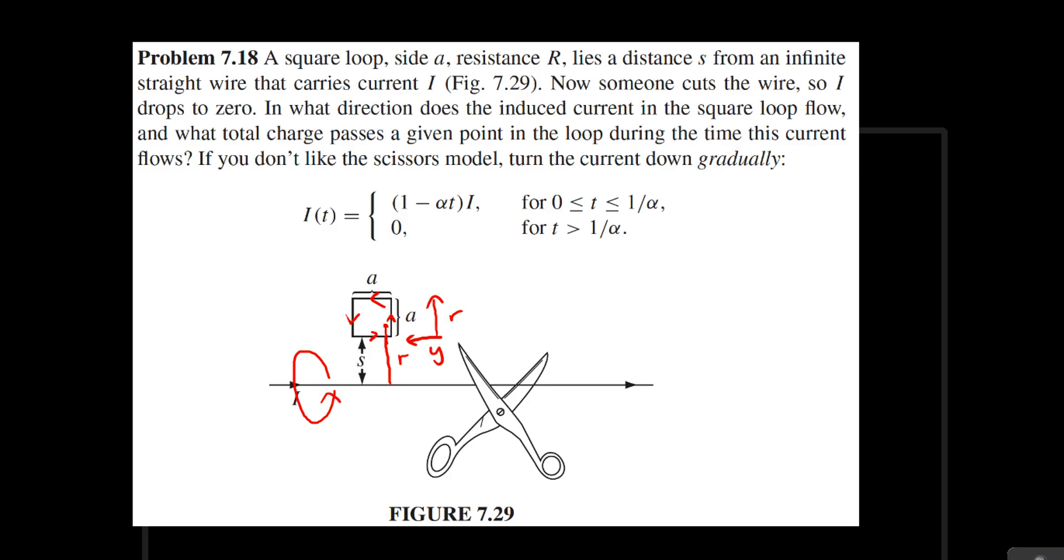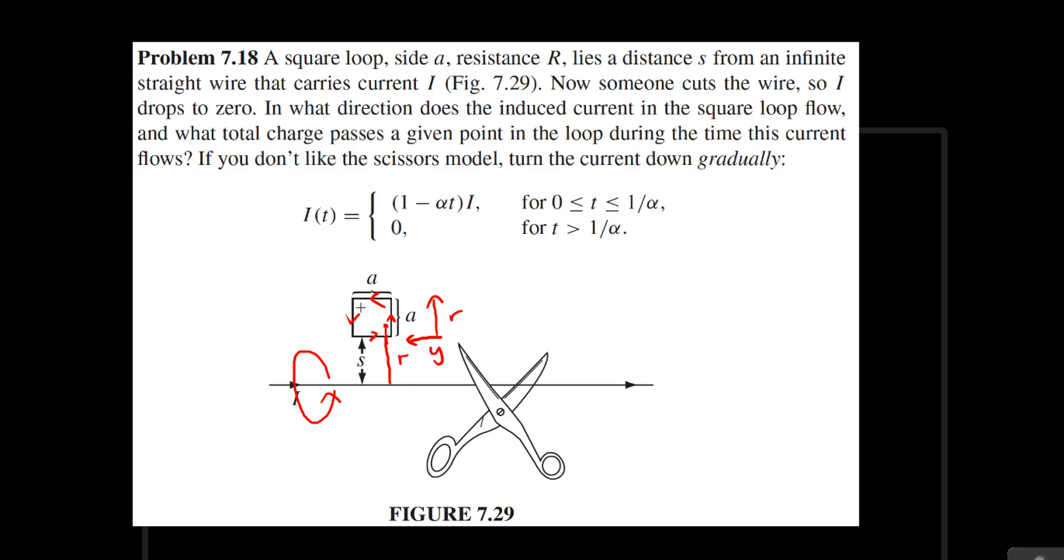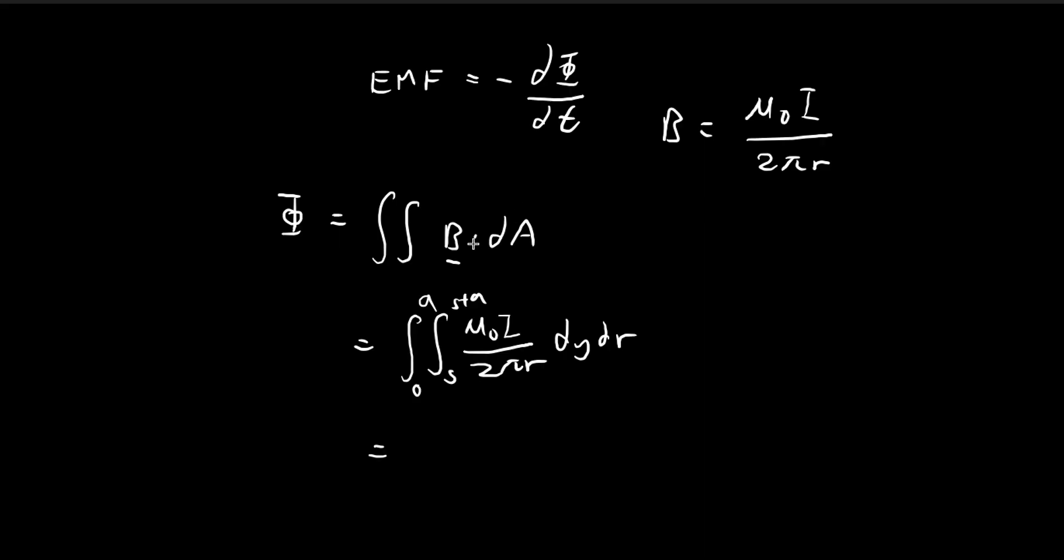And also don't forget that dA is actually a vector. And in our case, we've chosen it so that the magnetic field and the dA is pointing in the same direction. So dA is going to be perpendicular to this square over here, the surface of this square over here. And the magnetic field at this point is also going to be pointing upwards. So they're both parallel to each other. That's why I can take away the dot product and then directly substitute it dy dr.